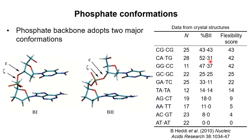They took the average of these two numbers to get a flexibility score. A high flexibility score means that the backbones of those dinucleotides did not show a strong preference for either backbone conformation — those dinucleotides were flexible enough to allow both conformations approximately equally. Conversely, a low flexibility score means that the backbone showed a clear preference for the B1 conformation.